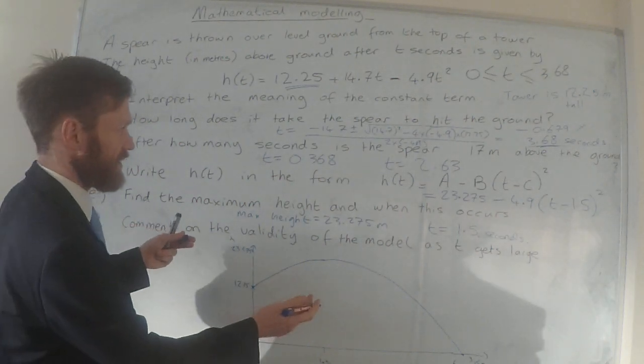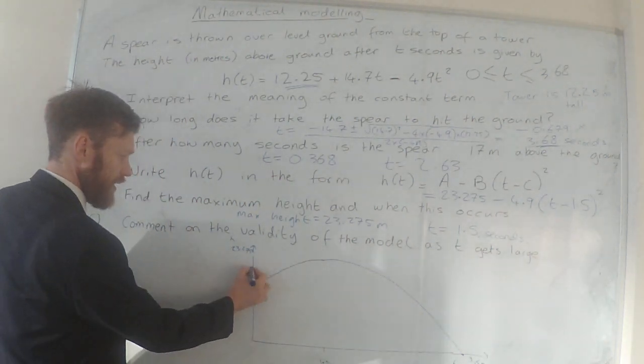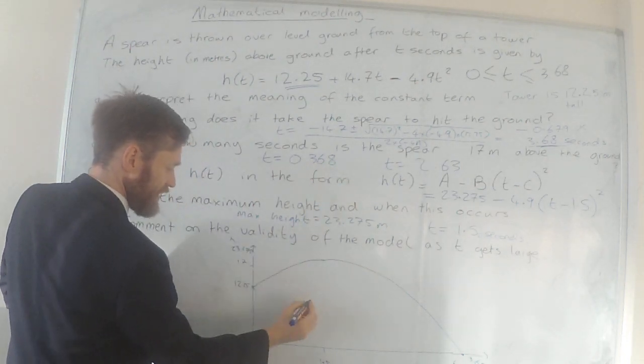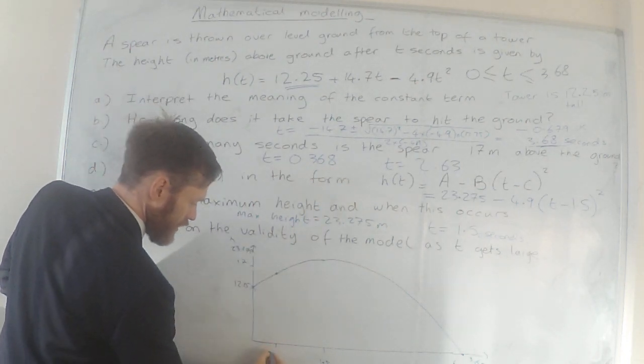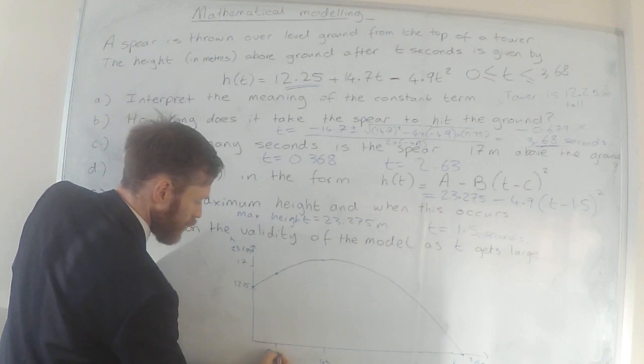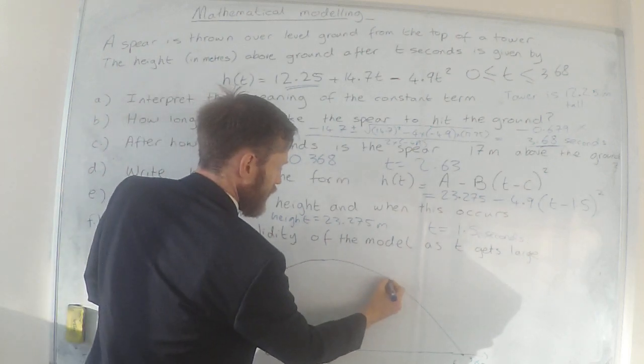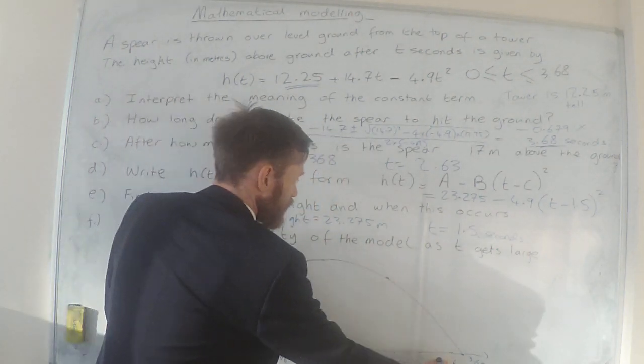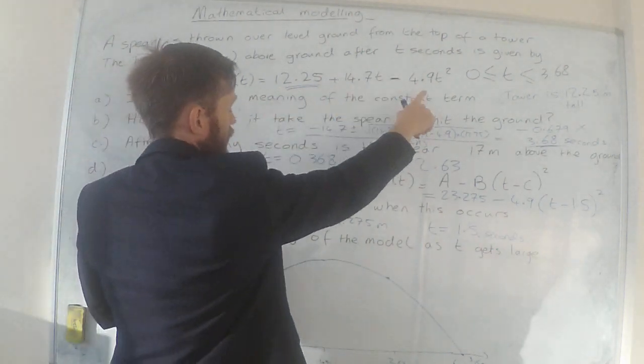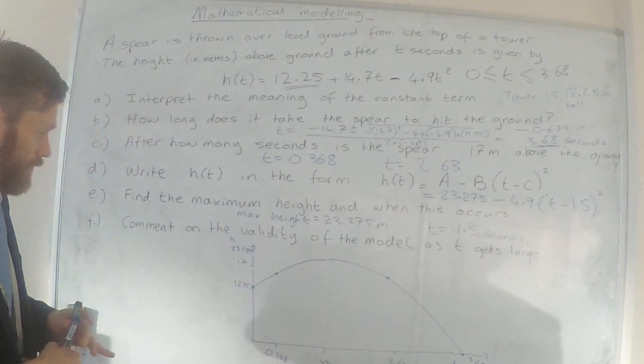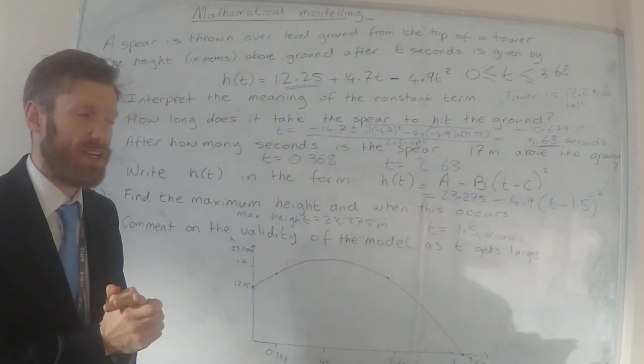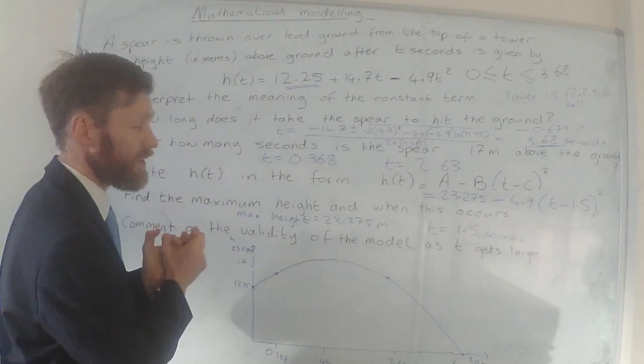And what we've also worked out is we know the height would be 17 at 0.368 seconds, so about here, the height would be 17 at 0.368 and again over here at 2.63. So this is what our model is looking like for this equation. There we go, so that's how we were able to model a real-life situation using a quadratic equation.